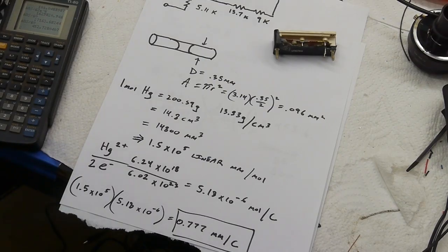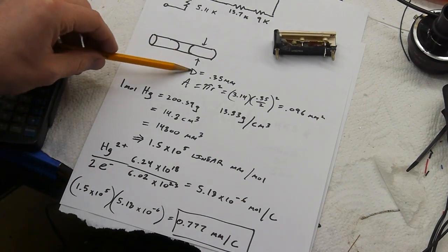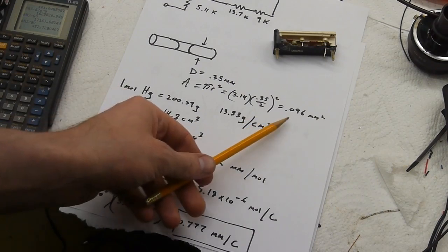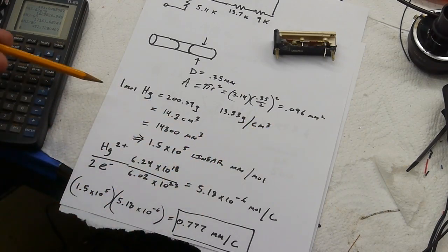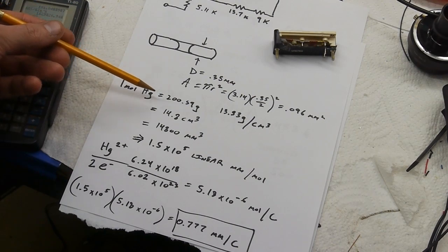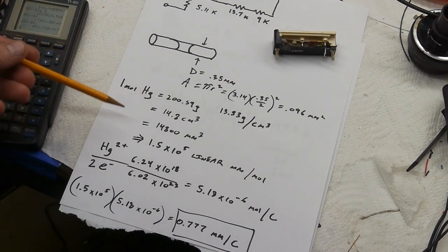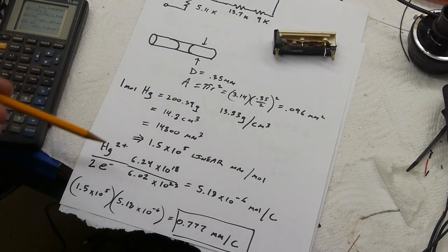I wanted to see if I could figure out how fast the counter should run based on the actual physics involved, and it actually turned out fairly close. So I measured the capillary diameter at about 0.35 millimeters, and then calculated the area, and the molecular weight of mercury is about 200 grams, and then with the density we can figure out that one mole of mercury is about almost 15,000 cubic millimeters.